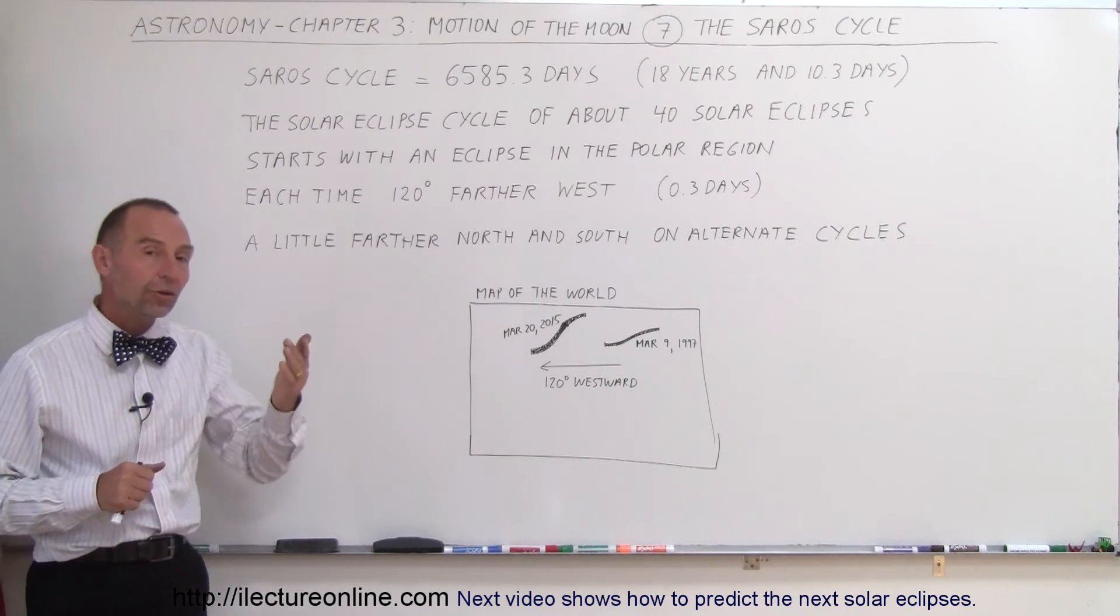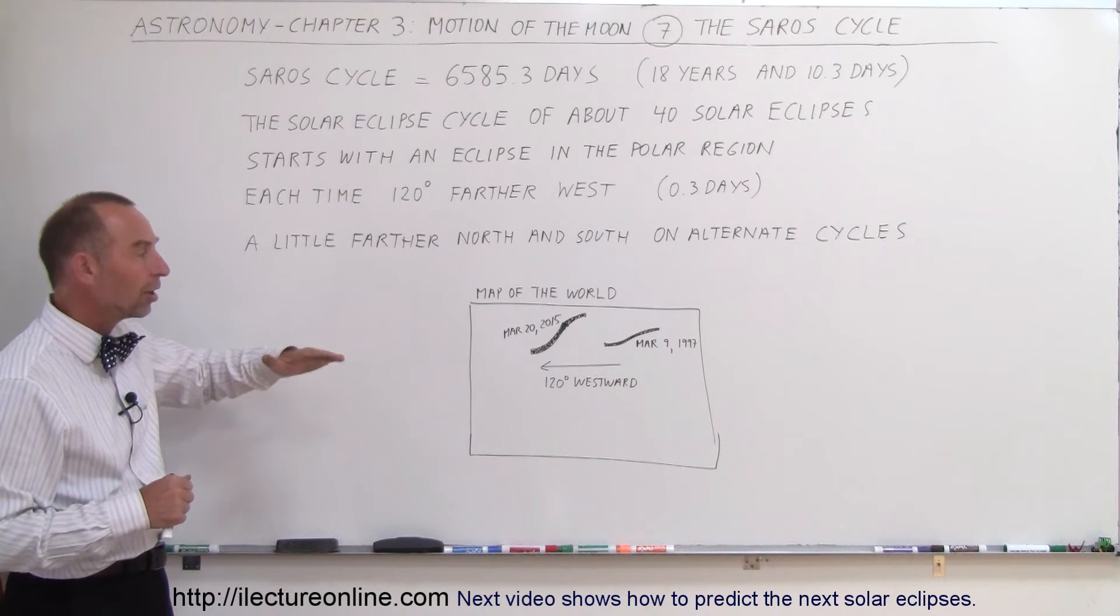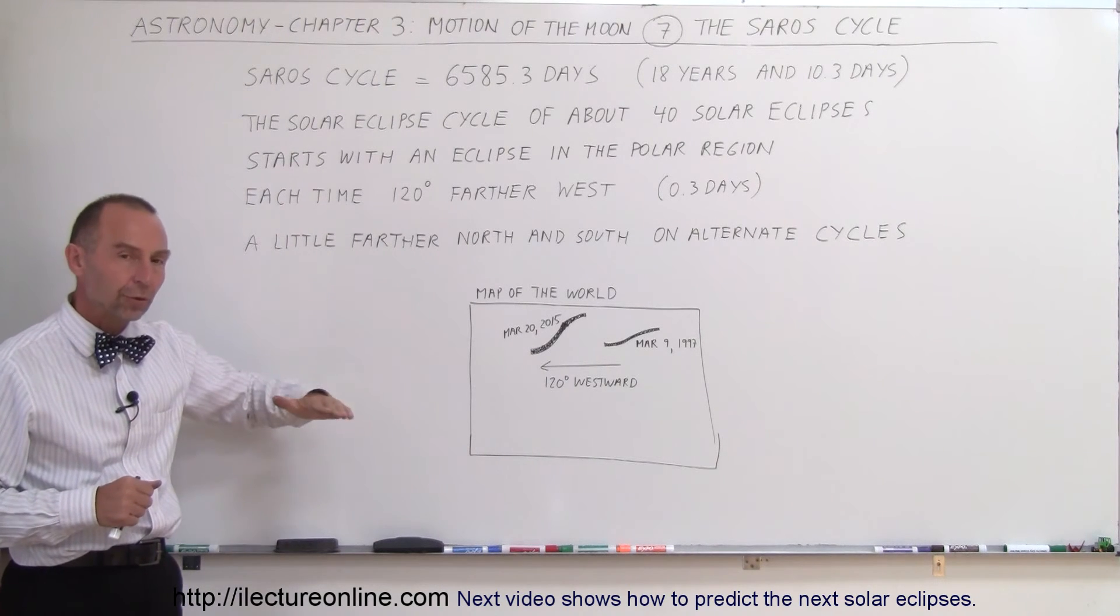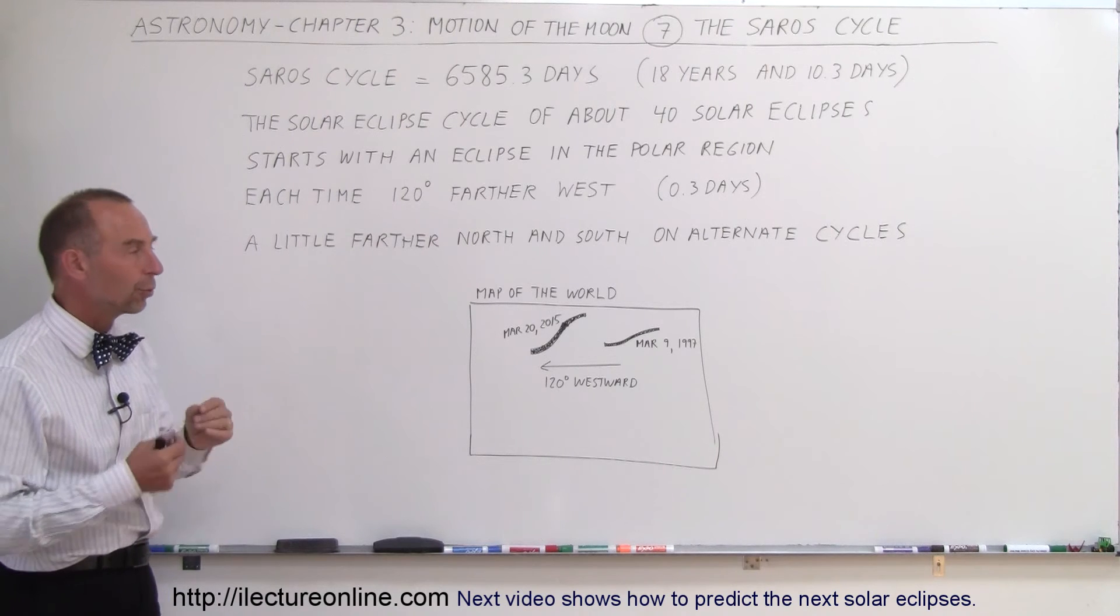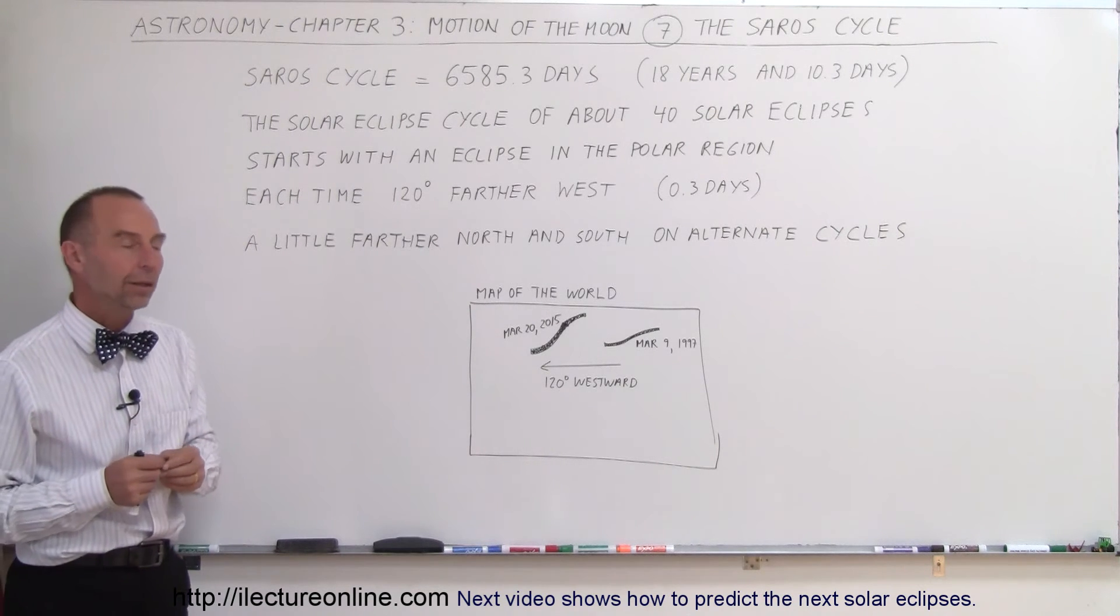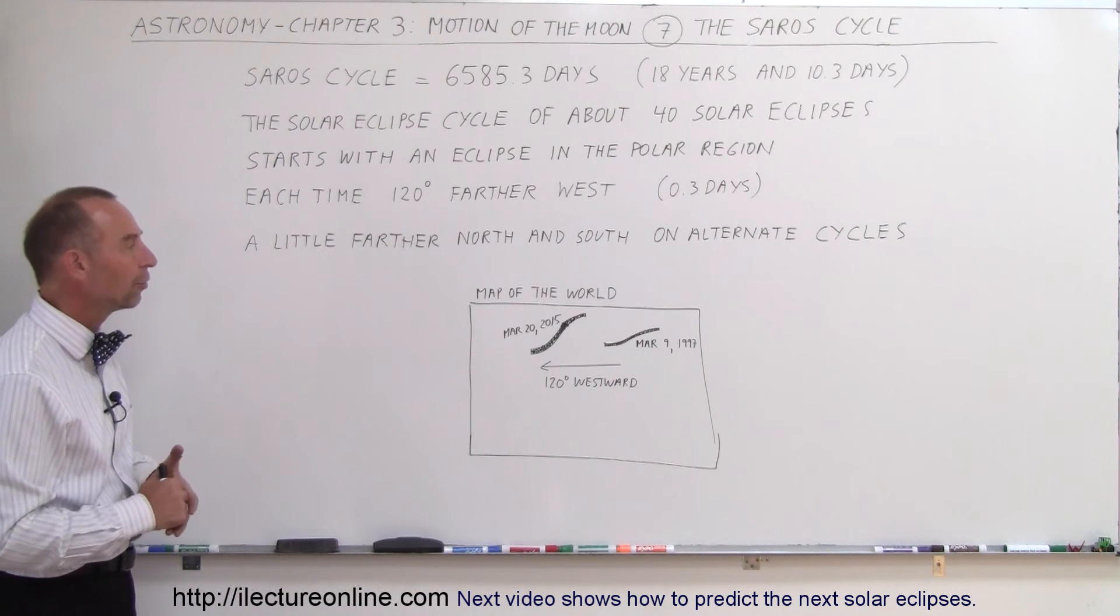Also, on alternate cycles, the eclipse will start a little further north or a little bit further south, back and forth, so we see that trend as well with the start of the solar eclipse.